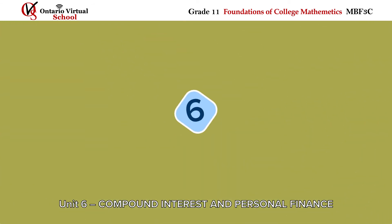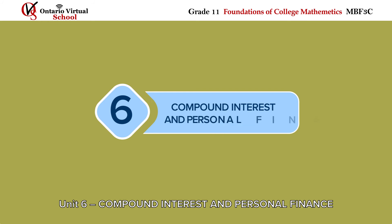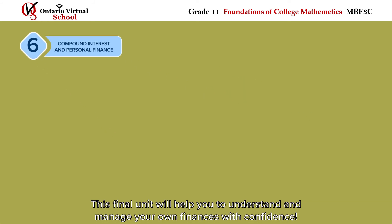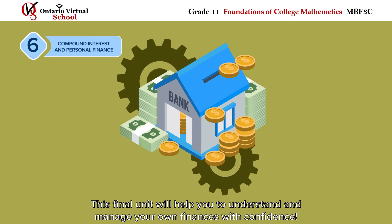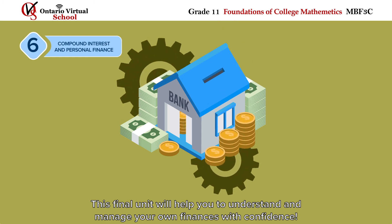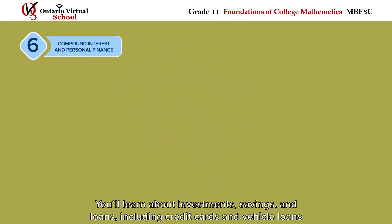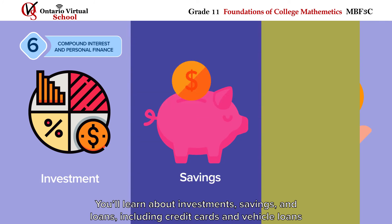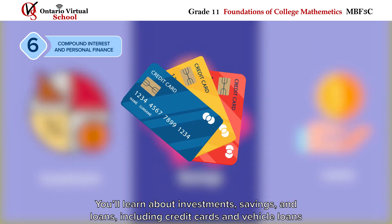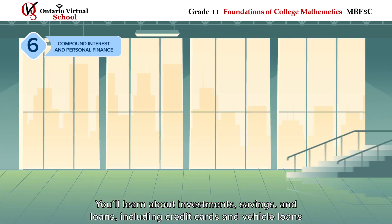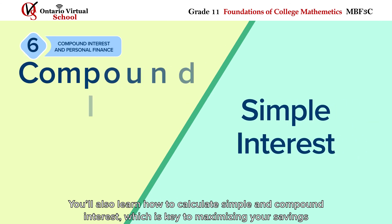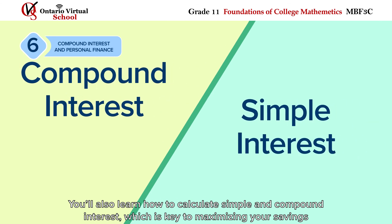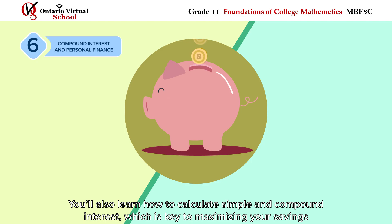Unit 6: Compound Interest and Personal Finance. This final unit will help you understand and manage your own finances with confidence. You'll learn about investments, savings, and loans, including credit cards and vehicle loans. You'll also learn how to calculate simple and compound interest, which is key to maximizing your savings.